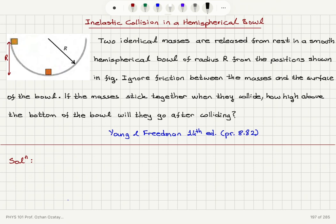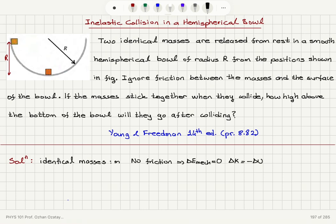We have identical masses — let's say they each have a mass M. We have no friction in the system, therefore the mechanical energy must be conserved. The change in kinetic energy is equal to minus the change in potential energy. The initial speed of both masses was zero. There is an initial potential energy stored due to the mass on top, which is at a distance R from the bottom. So we have a potential energy MgR. The final potential energy when it reaches the bottom will be zero.